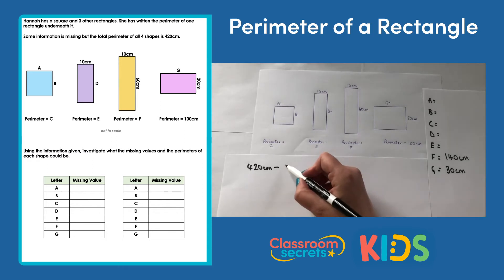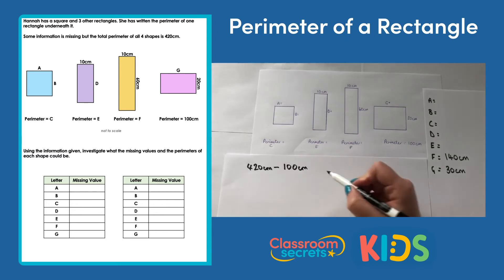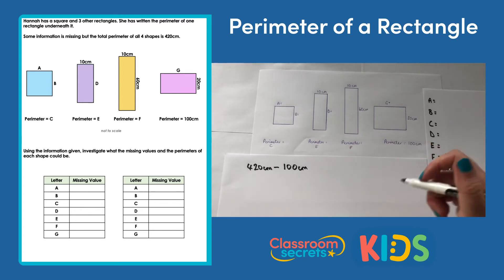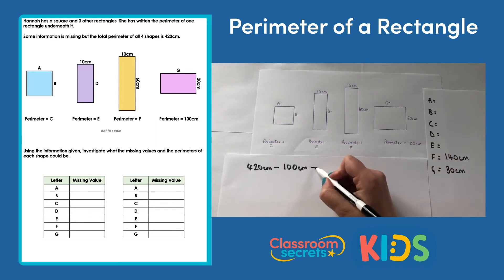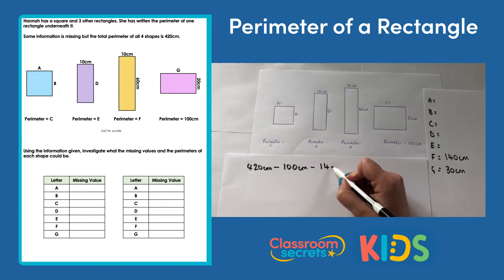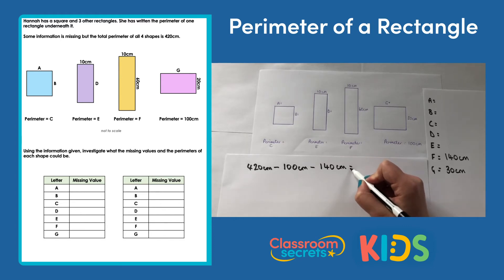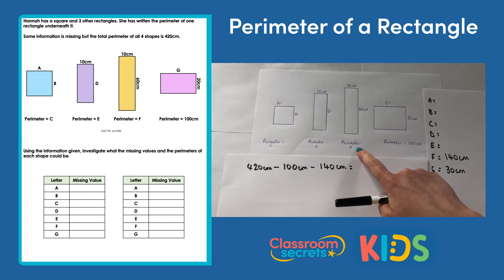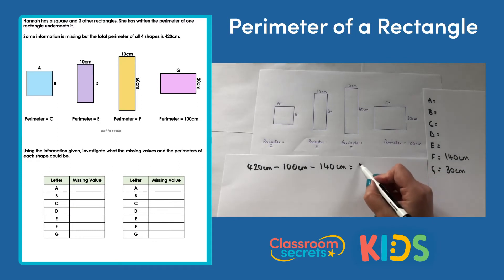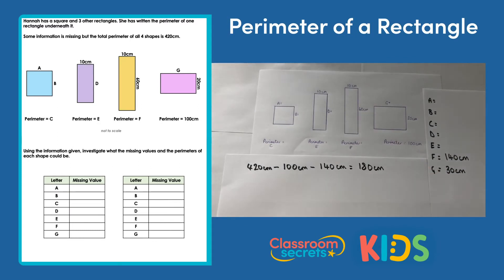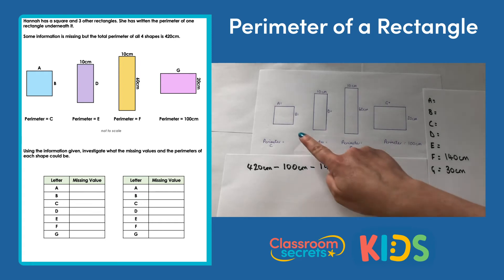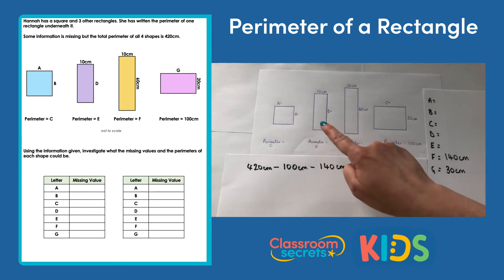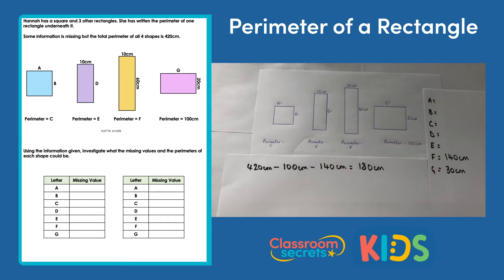So we could have 420cm, take away 100cm — that's the perimeter of one shape — and then subtract a further 140cm, because that's the perimeter of this shape here. Our answer is 180cm. So the combined perimeter of the two remaining shapes is 180cm.